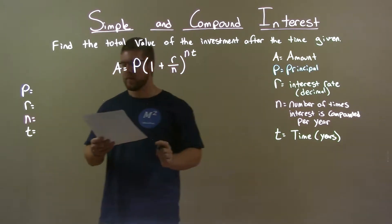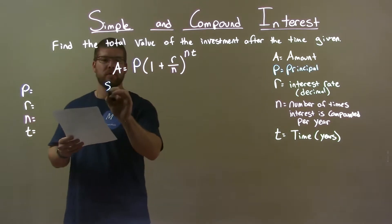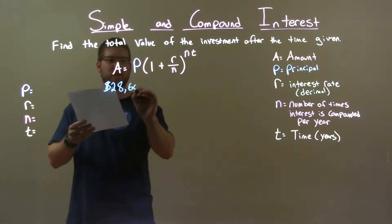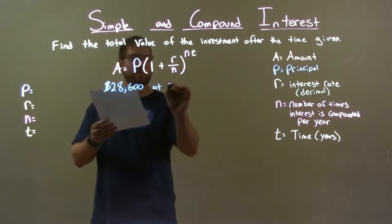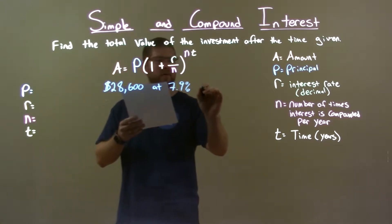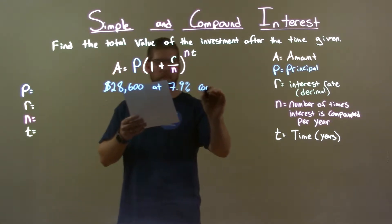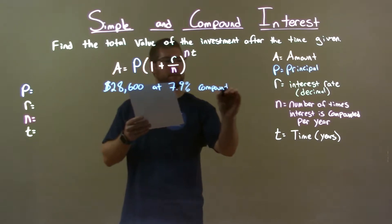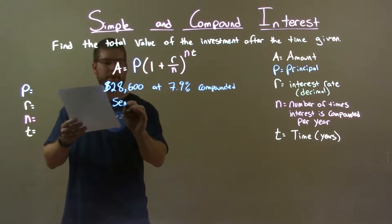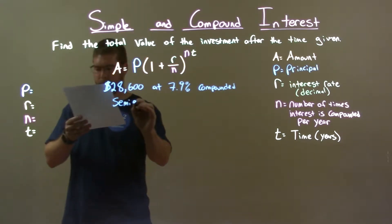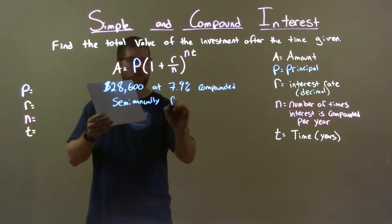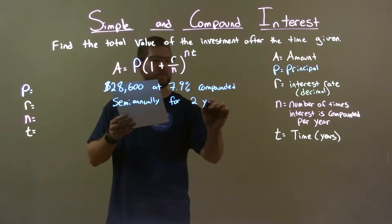If I was given this problem: $28,600 at 7.9% compounded semi-annually for two years.